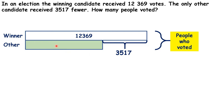So, to start with, we need to know how many people voted for the other candidate. How can we work this out? Well, as we know that this was 3,517 fewer than the winner, we can work out 12,369 minus 3,517.